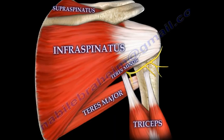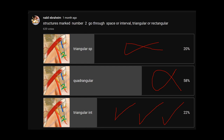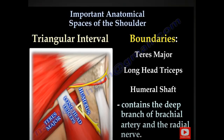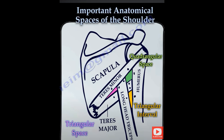The borders of the quadrangular space are: teres minor above, teres major below, the long head of the triceps medially, and the humerus laterally. The radial nerve — structure number two — passes through the triangular interval, not the quadrangular space. Structure number one, the axillary nerve, goes through the quadrangular space. The triangular interval contains the radial nerve and the deep branch of the brachial artery. In the diagram, the quadrangular space and triangular space are at the top, while the triangular interval is inferior.